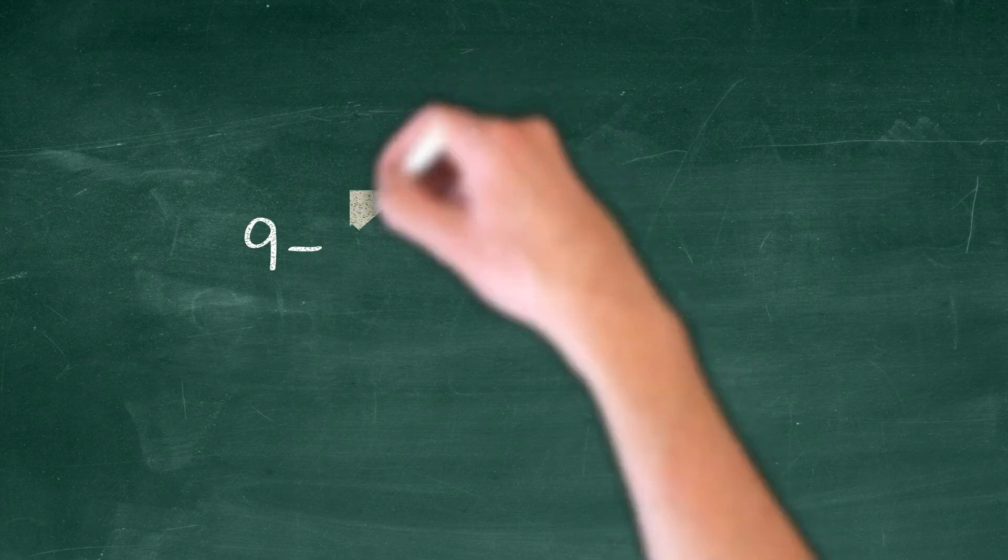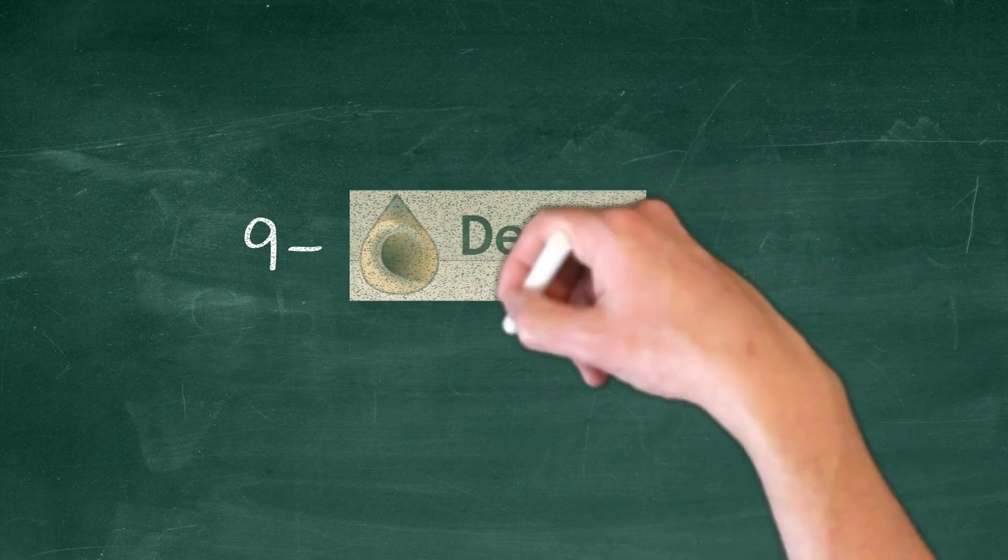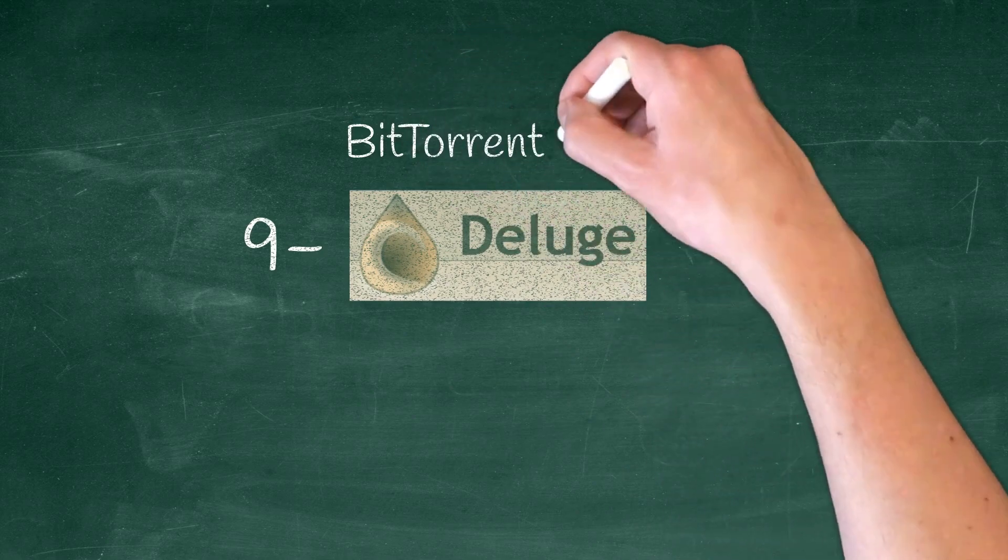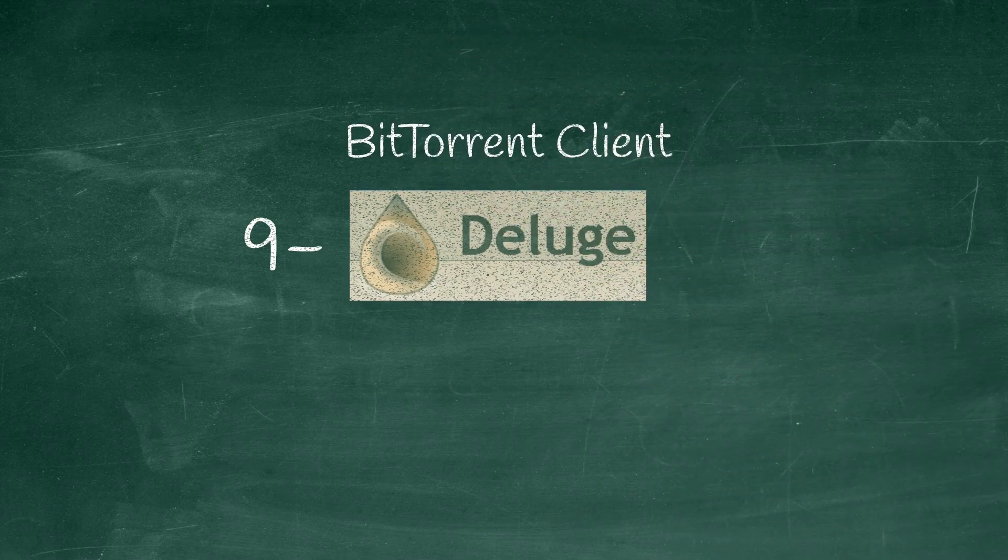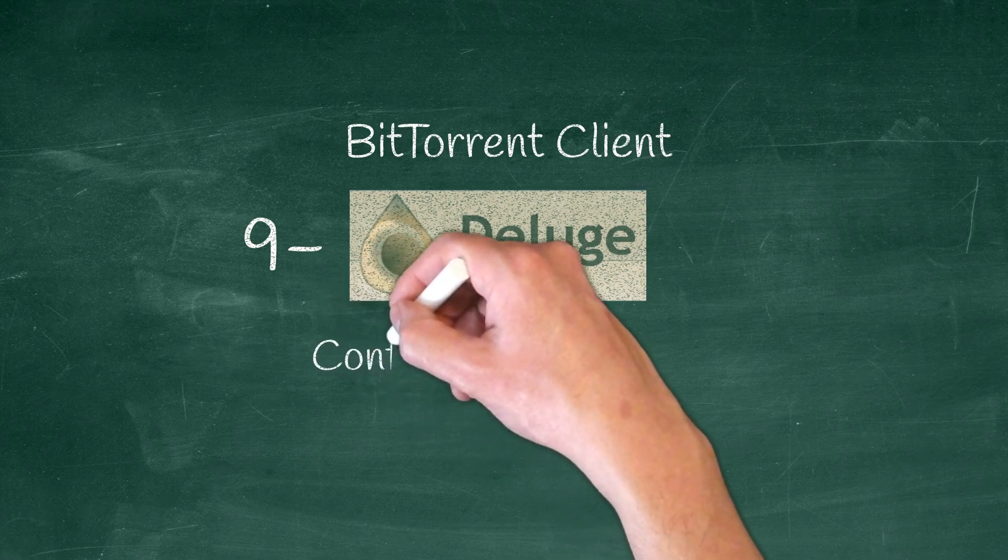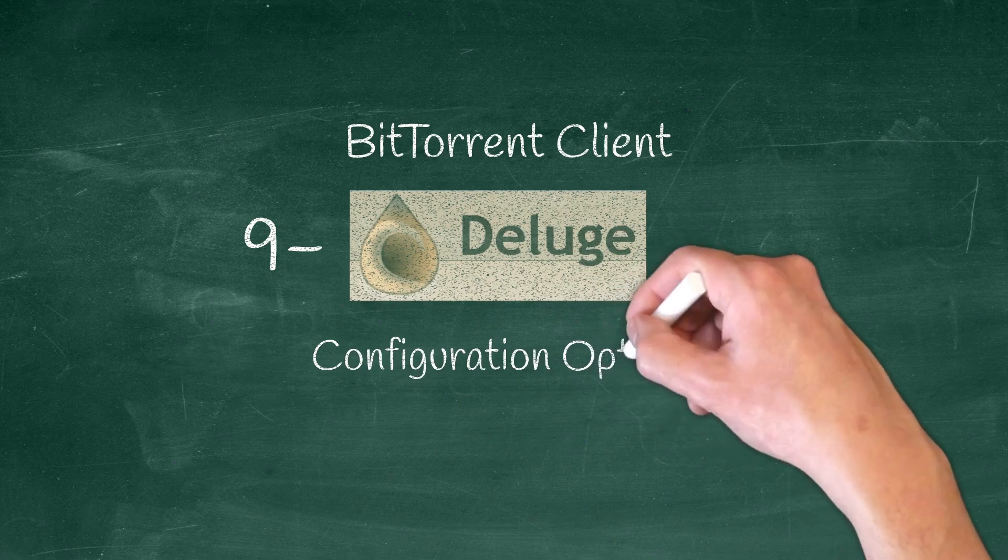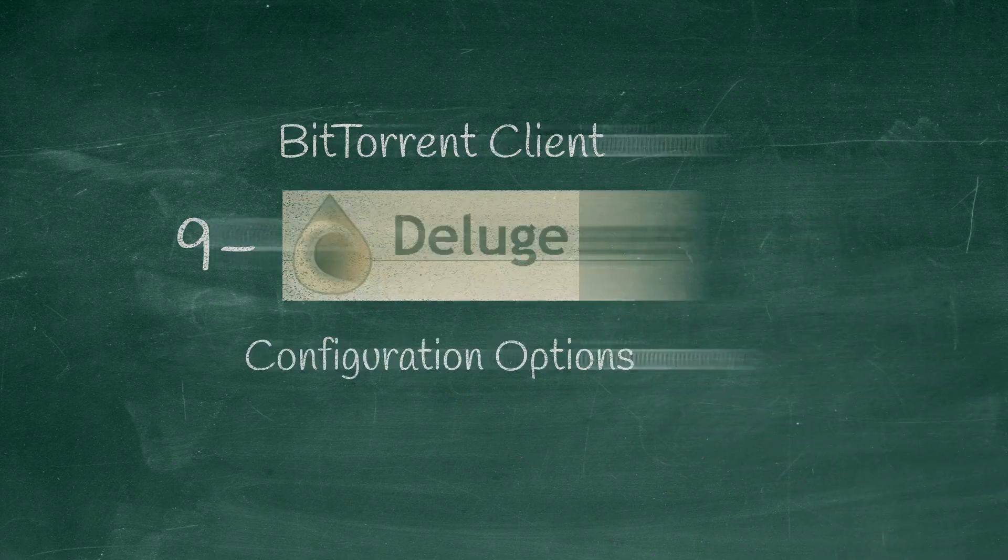Number 9, Deluge. Deluge is an open source BitTorrent client. It has a beautiful user interface. If you are used to using uTorrent for Windows, Deluge interface will feel familiar. It has various configuration options as well as plugin support for various tasks.